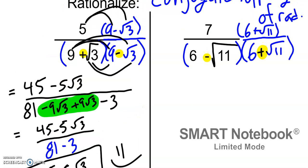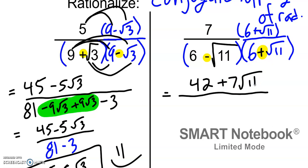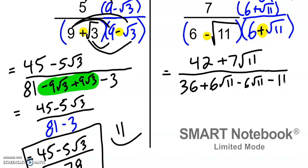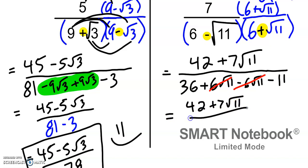For the second example, we multiply by 6 plus square root of 11. In the numerator: 6 times 7 is 42, and 7 times square root of 11 is plus 7 root 11. FOILing the denominator: 6 times 6 is 36, then plus 6 root 11, then minus 6 root 11 — those cancel — and then minus 11. We're left with 36 minus 11, which is 25. So the answer is 42 plus 7 root 11 over 25, with an integer denominator.